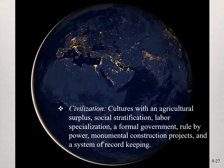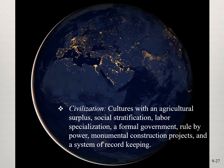We're going to call civilization: cultures with agricultural surplus, social stratification, labor specialization, formal government ruled by power, monumental construction projects, and a system of record keeping. Because we're part of this kind of civilization, we tend to call it civilized — and there's a bit of social Darwinism there, in which we see everybody else without formal governments and social stratification as less civilized. But hunter-gatherers never have to worry about being late, don't get caught in traffic, and have time to spend with family and friends.